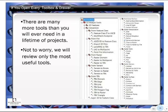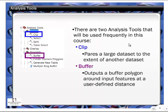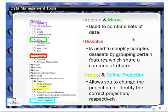Some tools you will use frequently. There are a couple of tools you're going to use in this GT 102 course under the Analysis Toolbox — basically the Extract Clip and the Buffer Tool. You'll find that you use these fairly frequently, and we do have geoprocessing lessons that will review how to use these particular tools. Some other tools you'll use in this workshop include the Append and Merge Tool, the Dissolve Tool, the Project Tool, which is very important, and also the Define Projection. Sometimes the tool names may not make a lot of sense, but they are what they are.